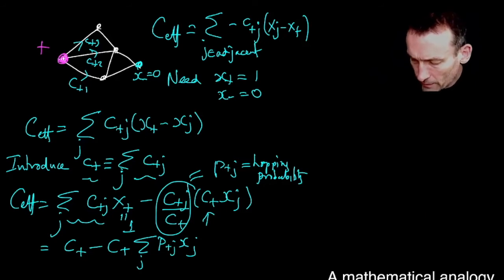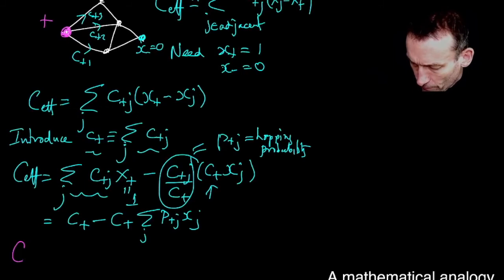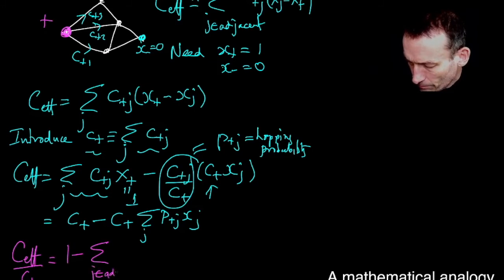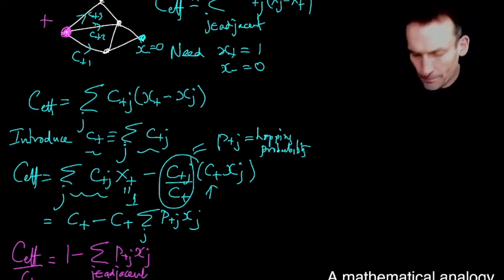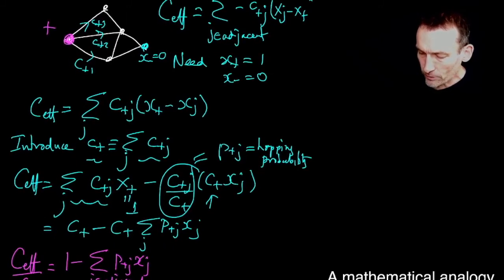All right. So interesting. I've got my effective conductance, by definition, is c plus minus c plus divided by one, divided by that sum. Now, if I divide, I can, of course, divide by the c plus here, and I get one minus the sum over the adjacent edges of p plus j xj. Now, let's just think about this quantity here. I'm summing over the adjacent nodes in this graph.